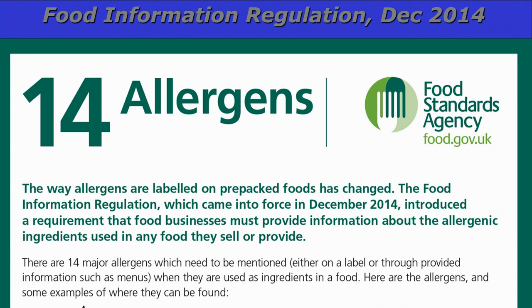Under the Food Information Regulation of December 2014, it is now law that 14 allergens must be recognized as problem areas. The way allergens are labelled on pre-packed foods has changed — these 14 major allergens must be mentioned either on the label or through provided information such as menus when used as ingredients.